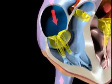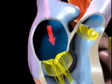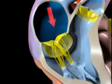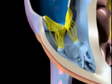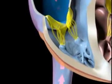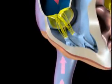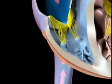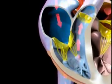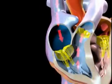Contraction of the right atrium in each cardiac cycle forces blood into the right ventricle. This is followed by contraction of the right ventricle which pumps blood into the pulmonary artery, sending it on through the blood vessels of the lungs.